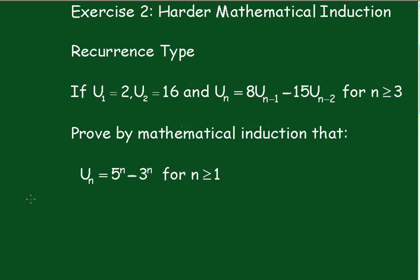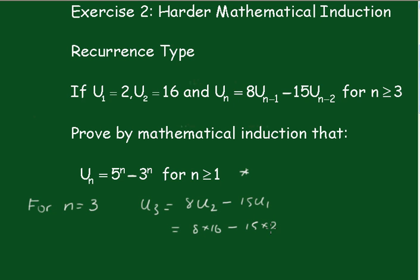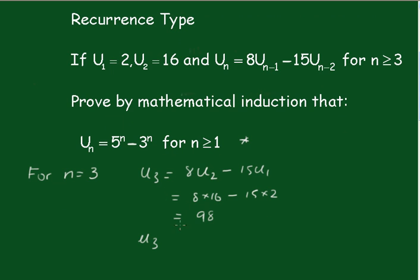For n equals 3, that's our statement up here. U3 equals 8·U2 minus 15·U1, which is 8 times 16 minus 15 times 2, and that's equal to 98. And from the formula, U3 equals 5 to the 3 minus 3 to the 3, which is also equal to 98. Therefore the statement is true for n equals 3.